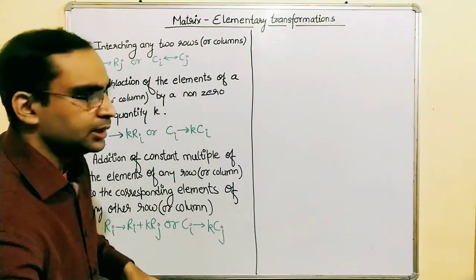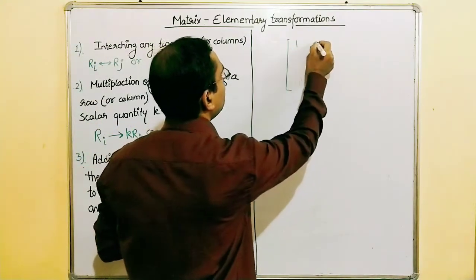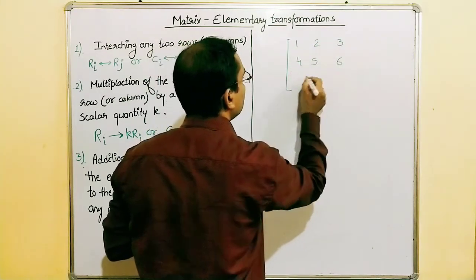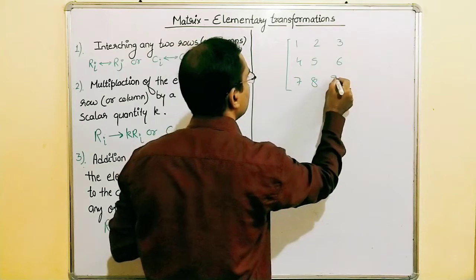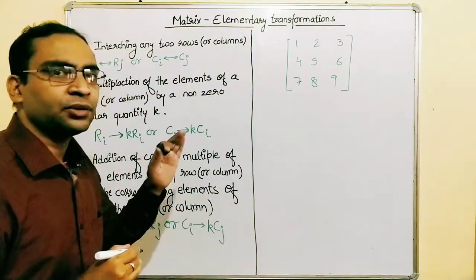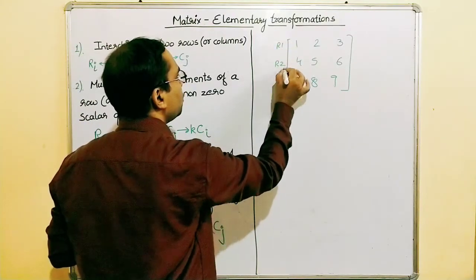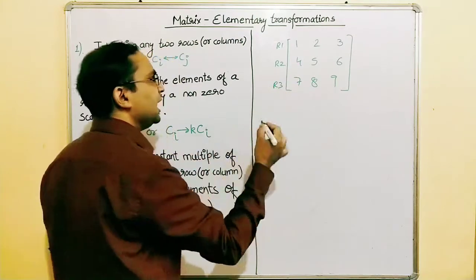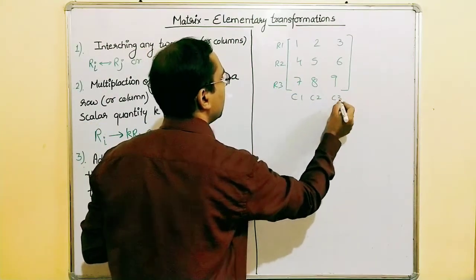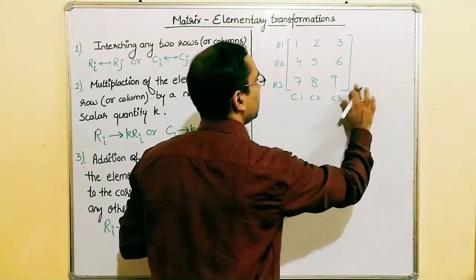Let's take a square matrix with values one, two, three, four, five, six, seven, eight, nine. This is a 3×3 square matrix. We have three rows — row one, row two, and row three — and three columns — column one, column two, and column three.